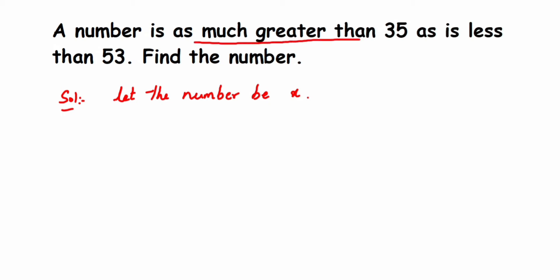Now according to the question, we have given that a number is as much greater than 35, means this x is greater than 35, and as is less than 53. So if x is greater than 35, obviously x minus 35, because the difference between these two numbers is the same as the number less than 53, means the same number is less than 53. So here this will be 53 minus x.